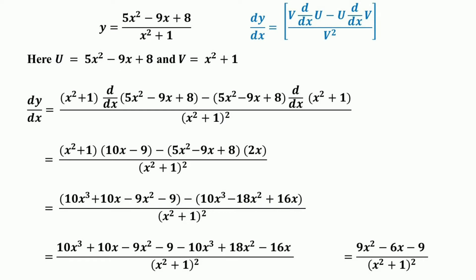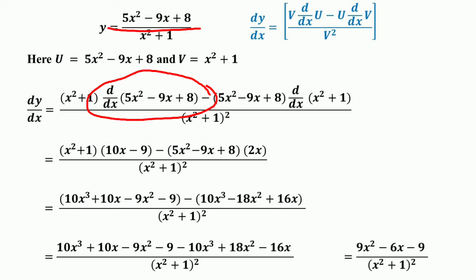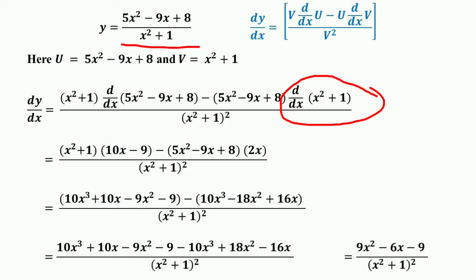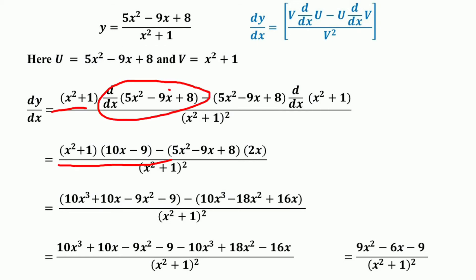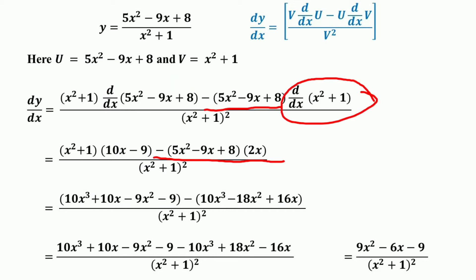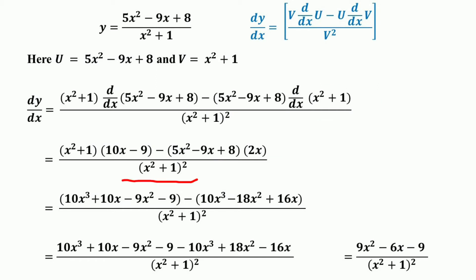By applying the quotient rule of differentiation, the derivative of the given function equals the denominator (x² + 1) times the derivative of the numerator d/dx of (5x² − 9x + 8), minus the numerator (5x² − 9x + 8) times d/dx of the denominator (x² + 1), whole divided by (x² + 1) squared. Which equals (x² + 1) times (10x − 9), minus (5x² − 9x + 8) times 2x, divided by (x² + 1) squared.